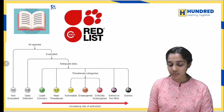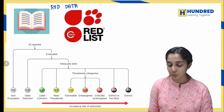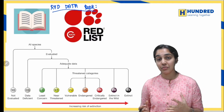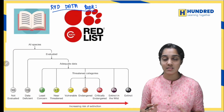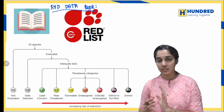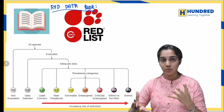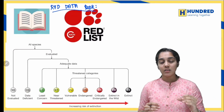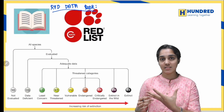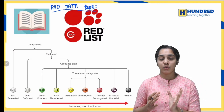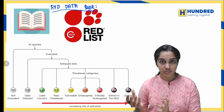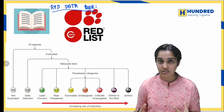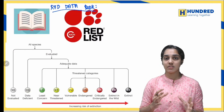Next topic: Red Data Book. This book contains a list of endangered species, extinct species, and species facing risk of extinction. The book is red in color — red indicates danger or a warning sign, serving as a warning sign for biodiversity loss.